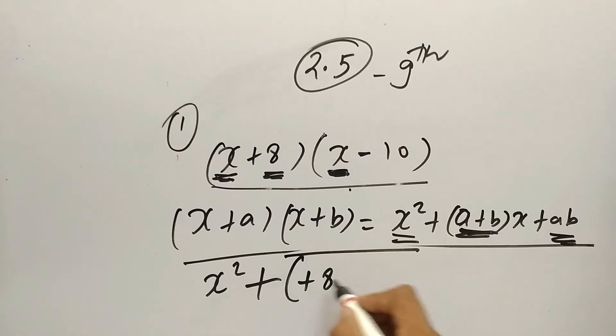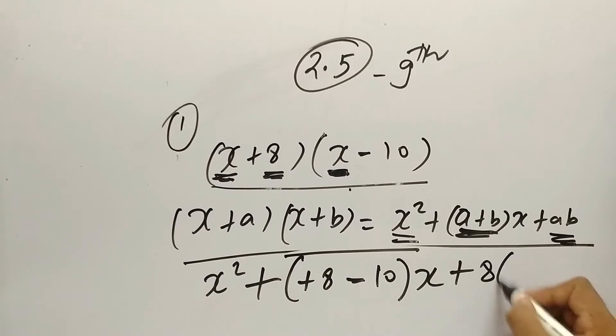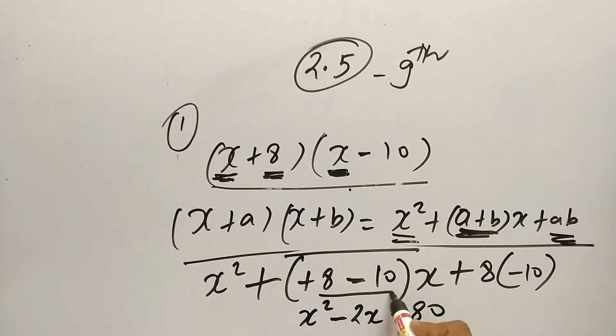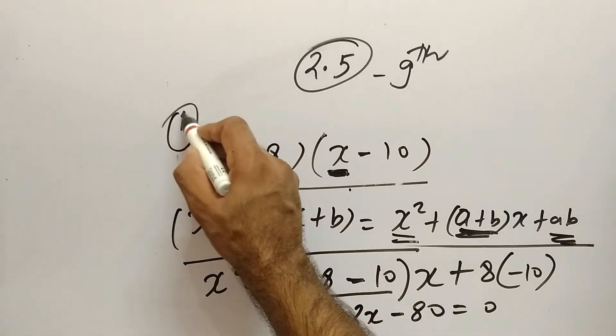Here a is +8 and b is -10. So x² + (8-10)x + ab, where a is 8 and b is -10. So x² + (8-10), which is -2, so -2x. And 8 times -10, which is -80. So what will be the answer? x² - 2x - 80. I hope the second part of the first question is also clear to you.